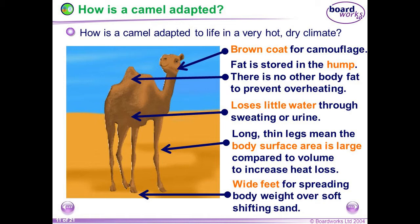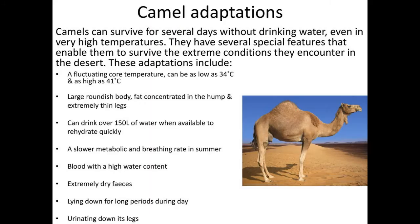Let us see the adaptations in the camel. A camel can drink a very large quantity of water at a time, which gets distributed all over the body into tissues. Camels sweat very little, which helps in conservation of water and prevents water loss from the body. They also excrete very little urine, and their feces contains very little water. Their breathing rhythm is very slow, so they lose very little water while breathing.